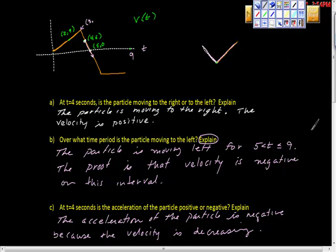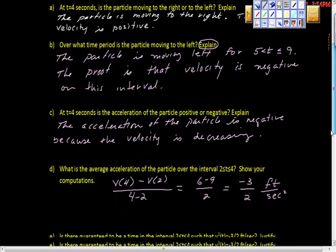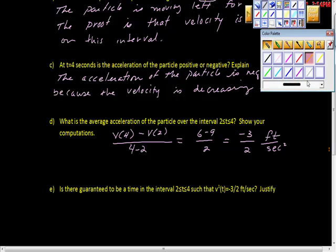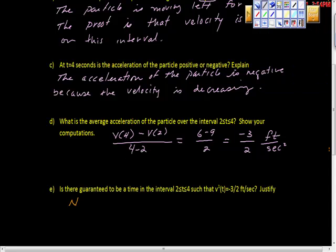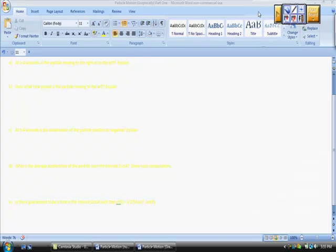That sharp turn — that's what I'm putting as my explanation. My answer is no, due to the abrupt sharp turn in the function at v of three. It's just too steep there. So that's what I have — I hope it's helpful. I'm going to try to get some more done for you soon.